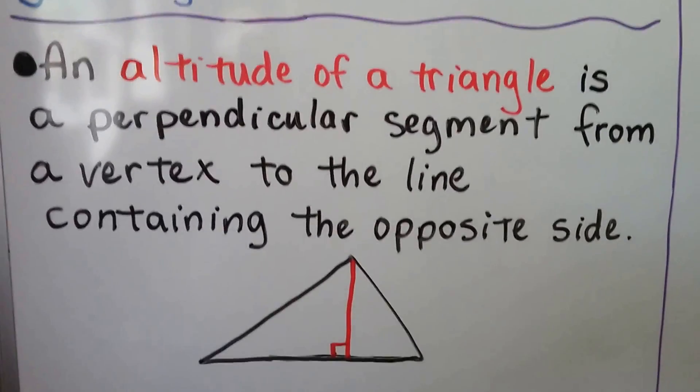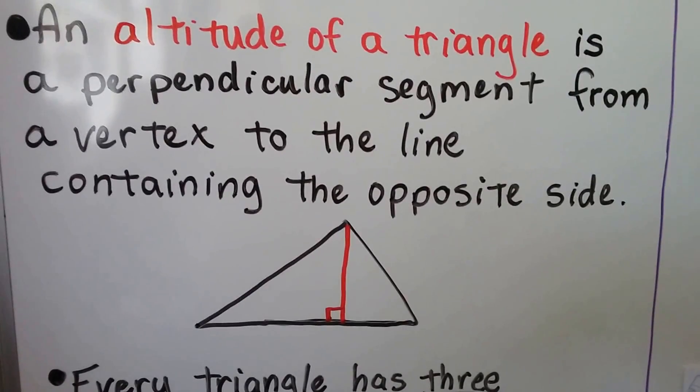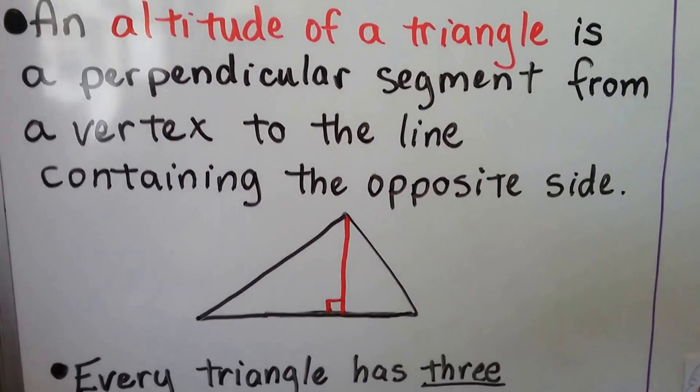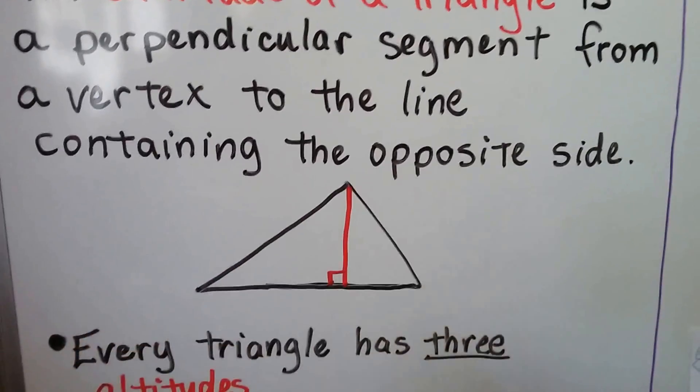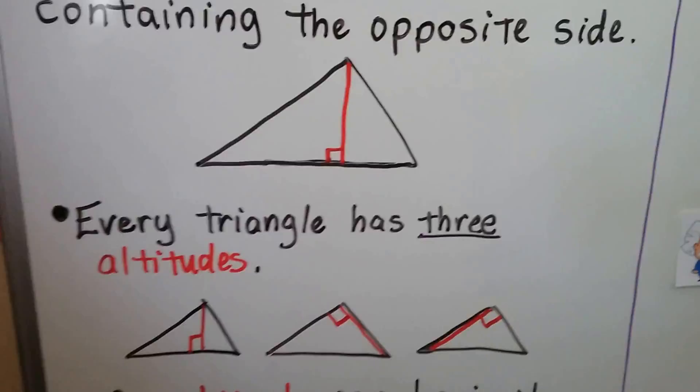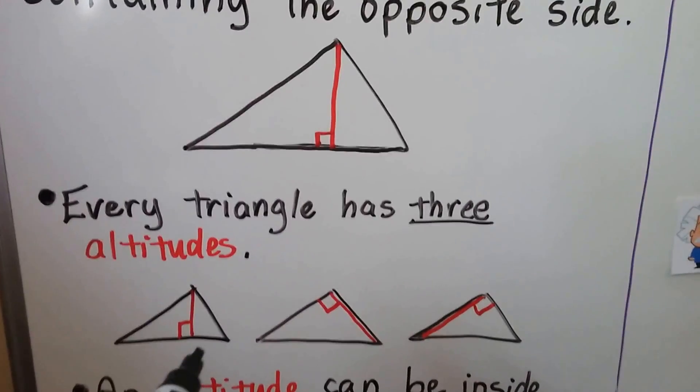An altitude of a triangle is a perpendicular segment from a vertex to the line containing the opposite side. So it's going from the vertex to this opposite side. It's perpendicular. And every triangle has three altitudes. Well that makes sense. There's three vertices. There's three opposite sides.